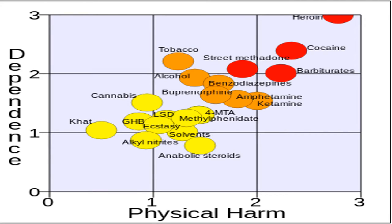Some drugs are much more addictive than other drugs. For example, heroin and nicotine are very, very addictive, and cocaine is very addictive as well. Some cause extreme physical harm. This chart shows the dependence level and the physical harm level of different psychoactive substances — you can stop the video if you'd like to look at it.